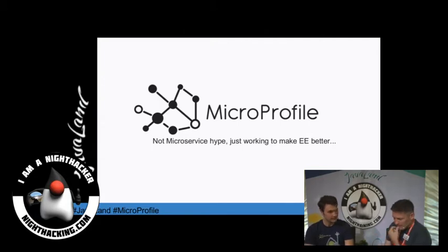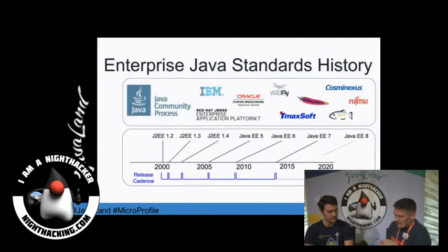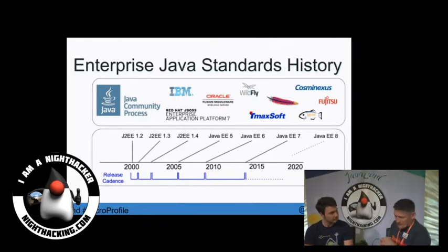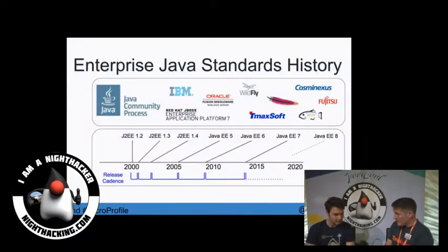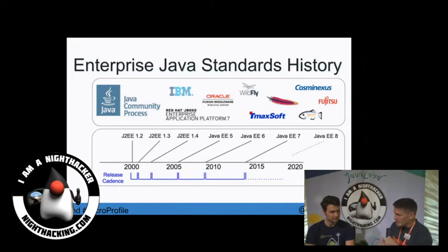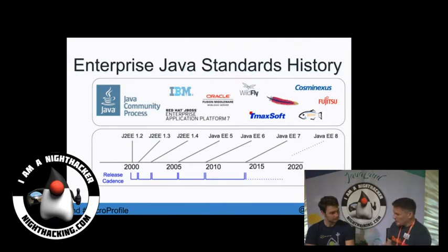What is MicroProfile? It's basically a collaboration forced by standards. We have the evolution of the EE platform — way down the left end of this chart is the name that is never to be said, Java EE old school stuff. It becomes kind of relevant at EE5, that's when things start to get better. EE6 is where it really took off and everyone said 'yes, this is what we wanted.' But successive iterations are taking longer and longer.